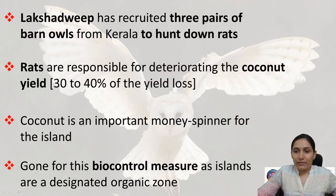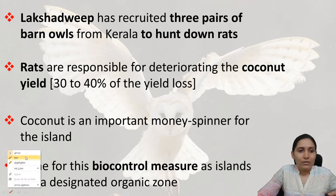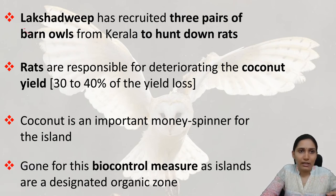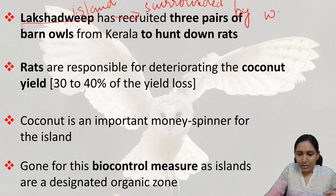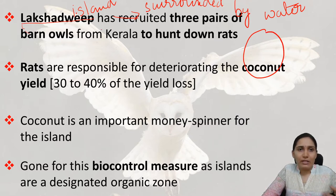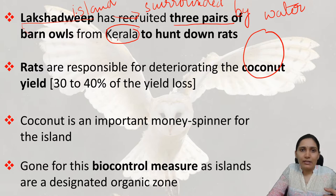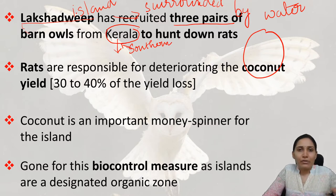Now let's come to the current affair — Lakshadweep. Lakshadweep is an island economy, which basically means a place surrounded by water on all its sides. Lakshadweep has recruited three pairs of barn owls from Kerala. Kerala is a southern state and it is also the immediate neighbor of Lakshadweep.